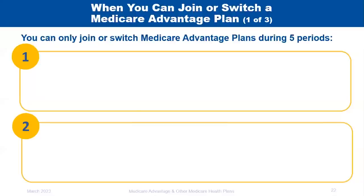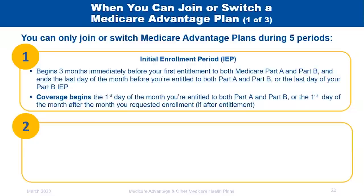There are five key enrollment periods for joining or switching a Medicare Advantage plan. The Initial Enrollment Period (IEP) is your very first opportunity — it begins three months before you turn 65, includes the month you turn 65, and extends three months after, or when you first become entitled to both Medicare Parts A and B. Coverage begins the first day of the month you're entitled, or the first day of the month after the month you requested enrollment.